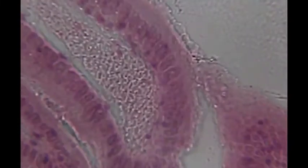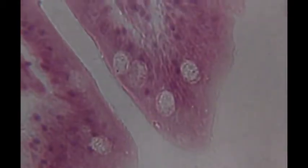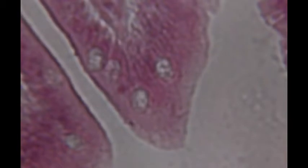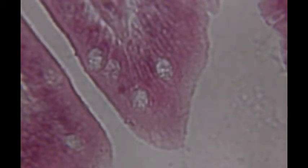I'm going to look and see if I can't find a section that shows a couple of different things. Here we go. This is an example of the simple columnar epithelium, and you can see a cell here with its nucleus, a cell here with the nucleus.